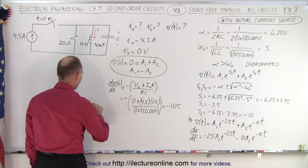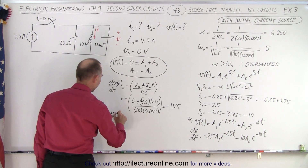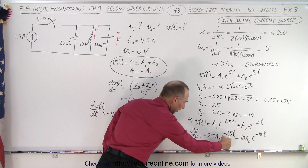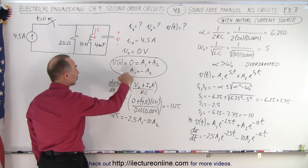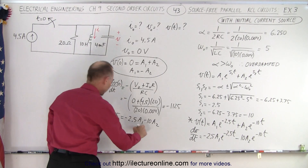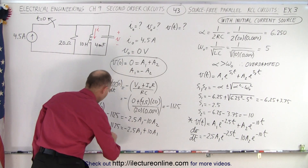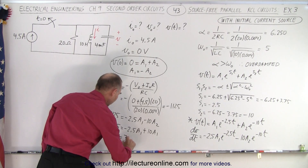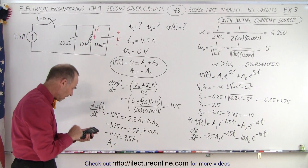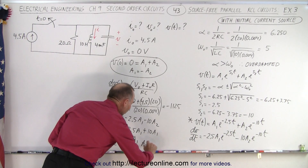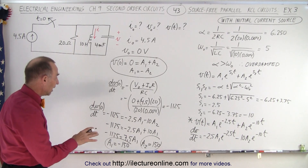Setting dv/dt at t=0 equal to −1125: −1125 = −2.5·A1 − 10·A2. Since A2 = −A1, we substitute: −1125 = −2.5·A1 + 10·A1 = 7.5·A1. Therefore A1 = −1125 / 7.5 = −150, and since A2 = −A1, A2 = +150.